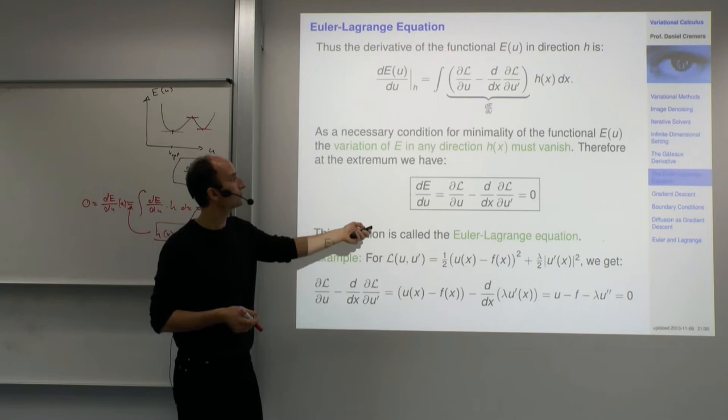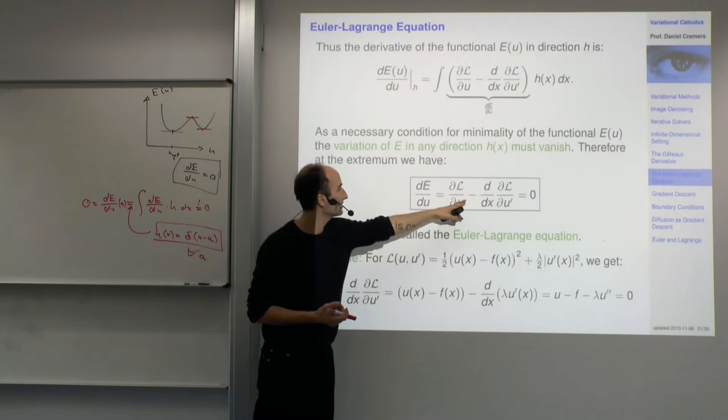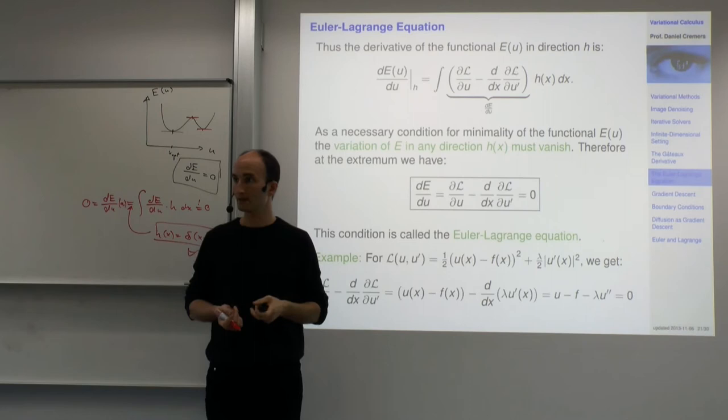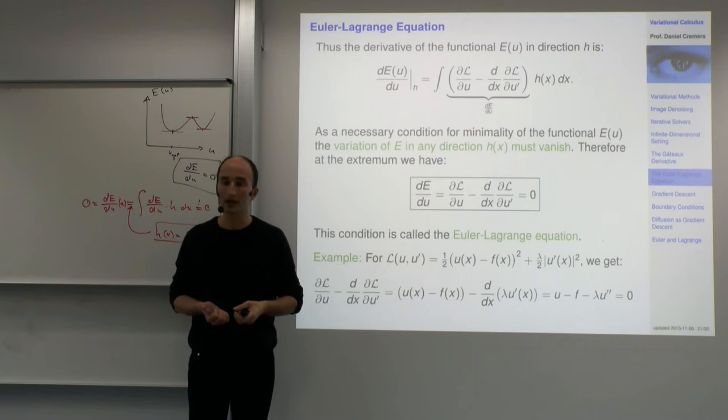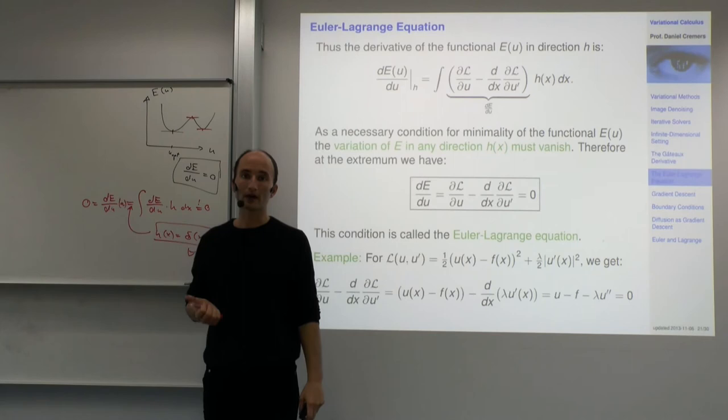Let's look at what this equation is. It's not one single scalar equation — it's a functional equation, an equation that depends on a function u, valid for any x. It's actually a differential equation, because we get derivatives in it. The Euler-Lagrange equation is a differential equation.